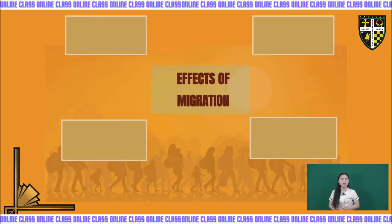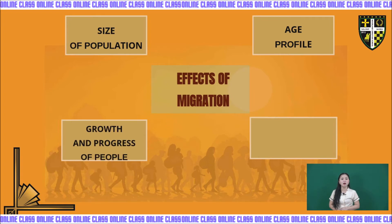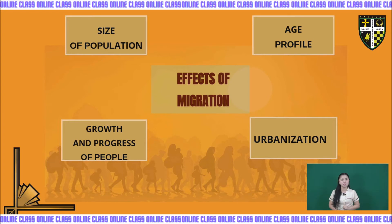So, what are the effects of migration? Number one is the size of population. Number two is age profile. Number three is growth and progress of people. And the last one is urbanization.